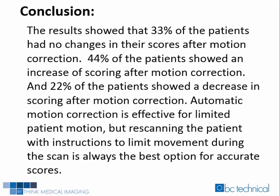The results showed that 33% of the patients had no changes in their scores after automatic motion correction, 44% showed an increase in scoring, and 22% showed a decrease in scoring after automatic motion correction. Automatic motion correction is effective for limited patient motion, but re-scanning the patient with instructions to limit movement during the scan is always the best option for accurate scores.